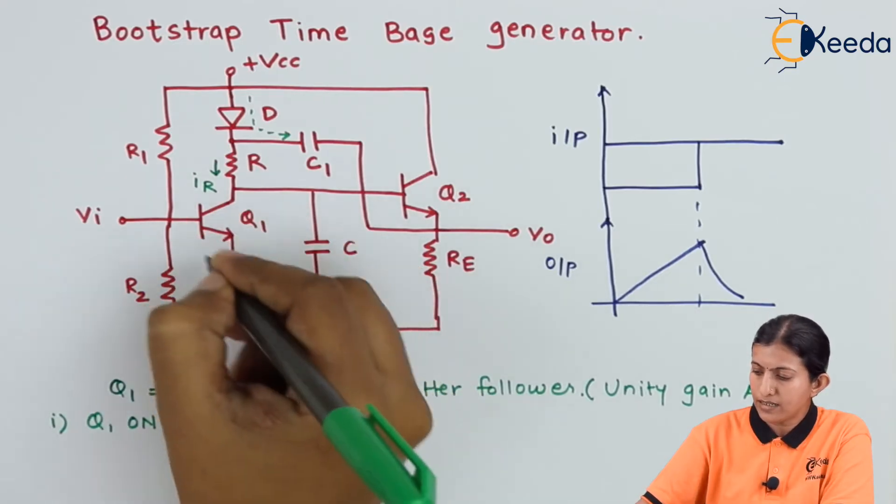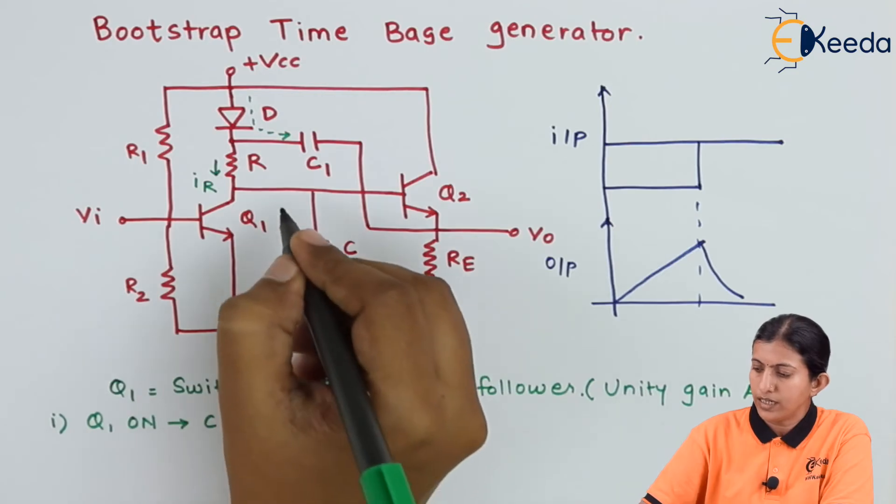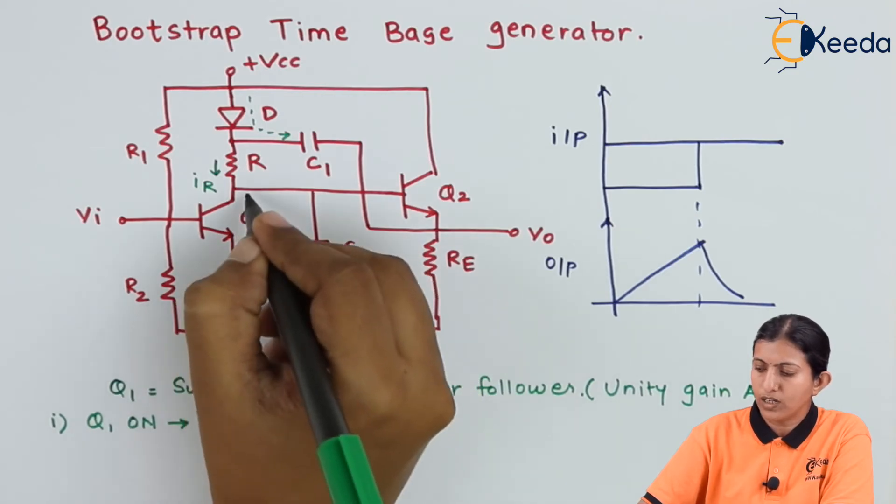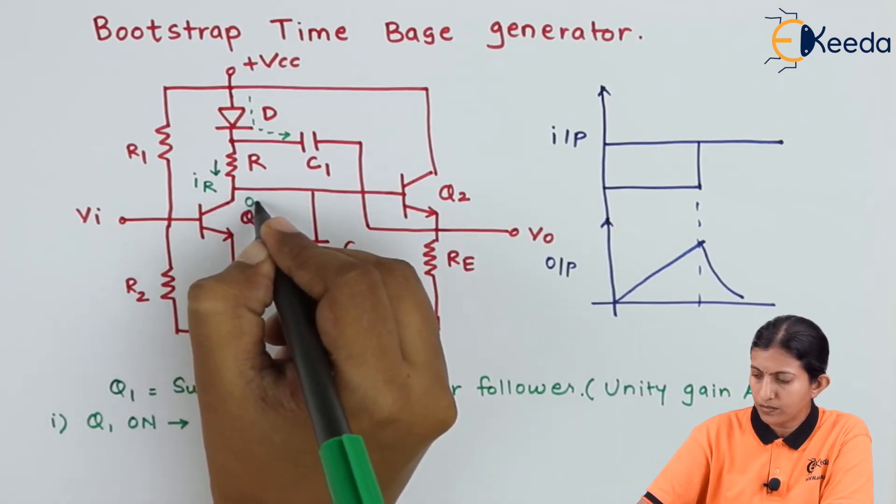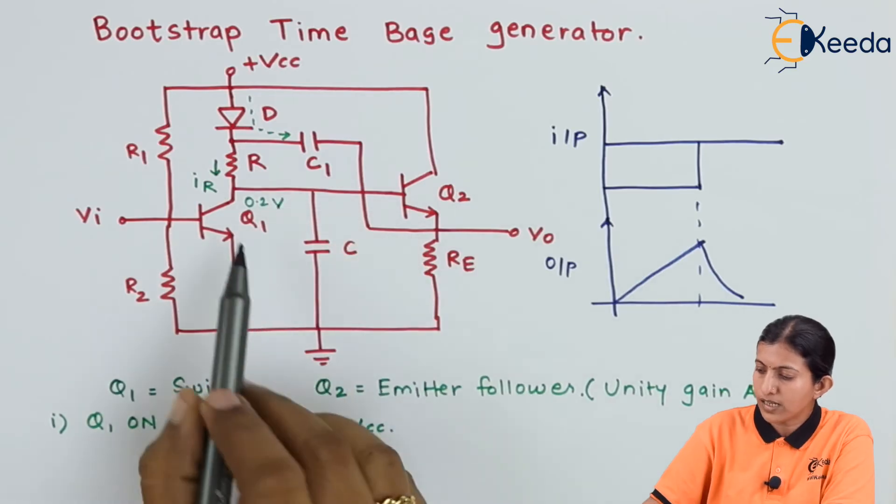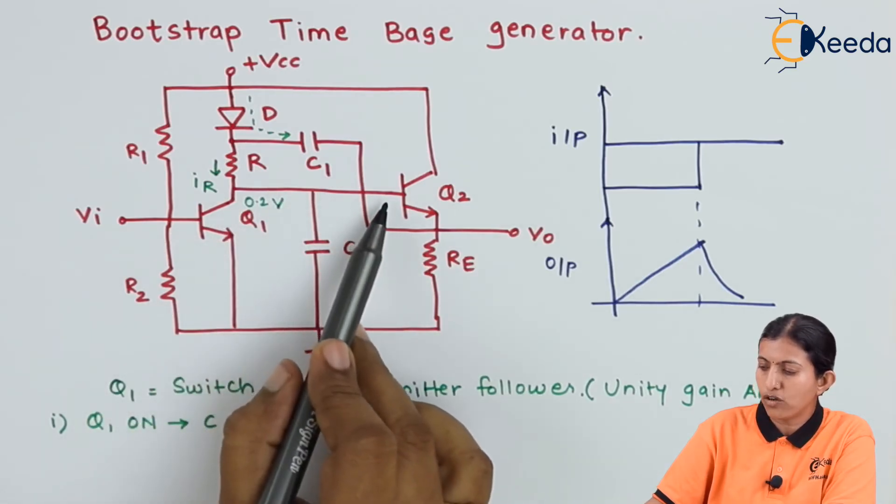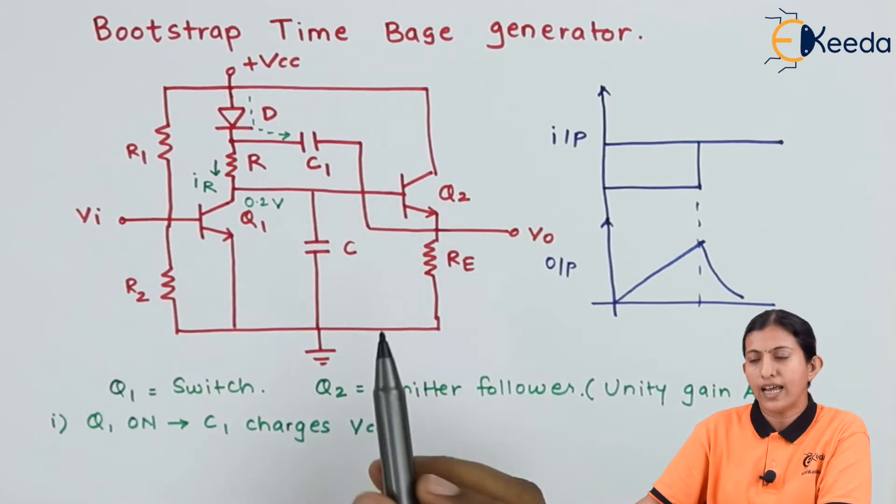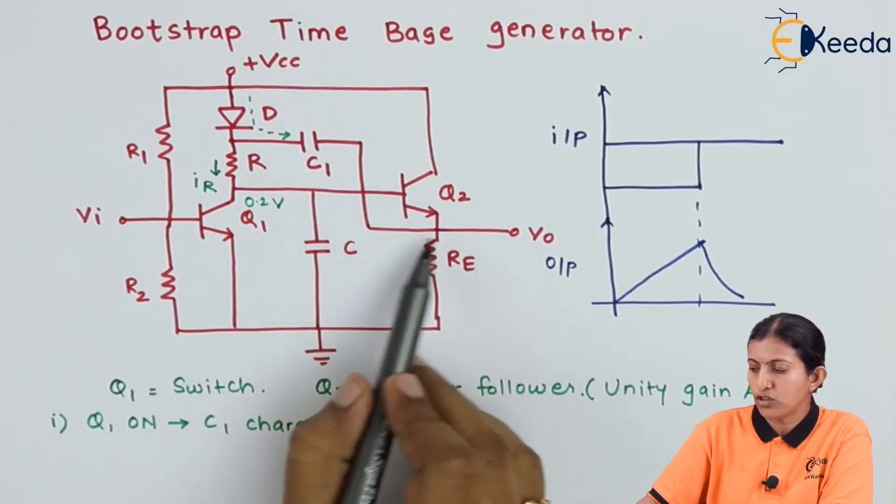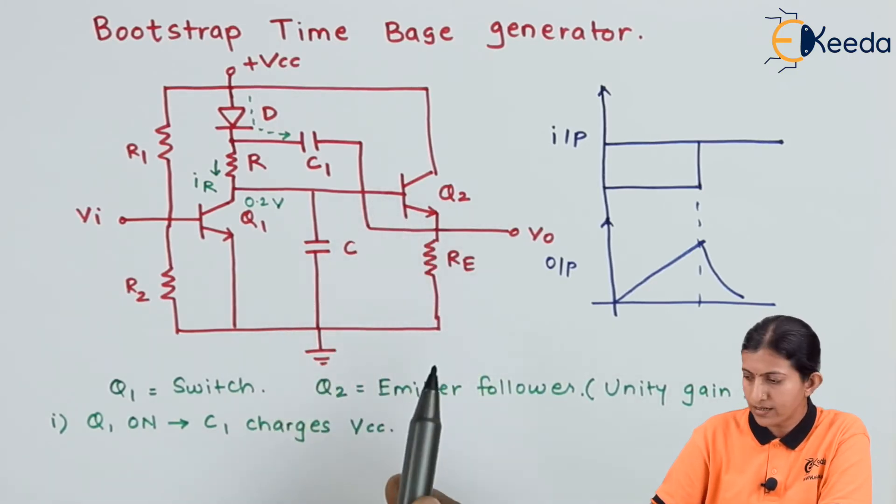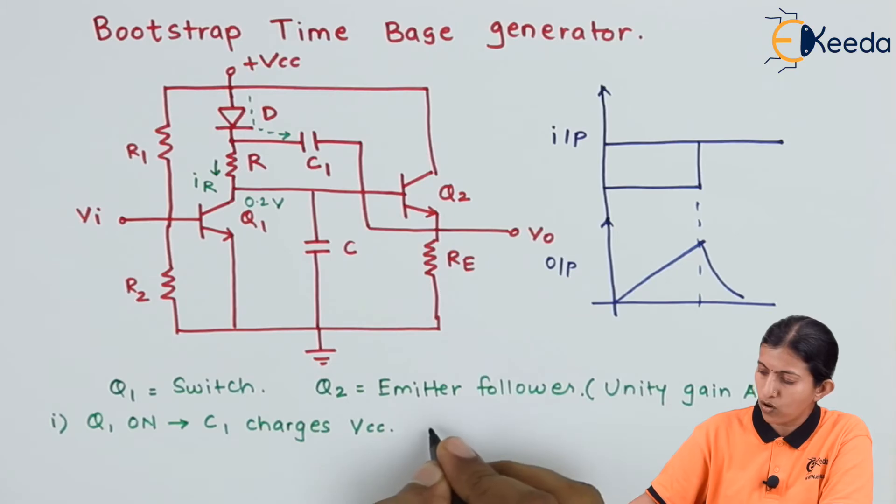And as this transistor is on, its output voltage is equal to 0.2 volts, which is applied to the base of the second transistor. And as the base-emitter voltage of the second transistor is very less, transistor Q2 is off.